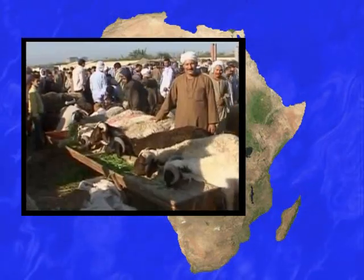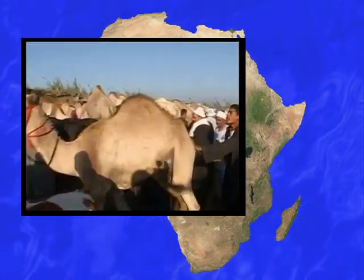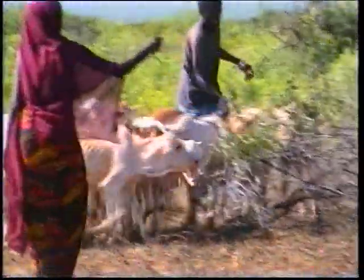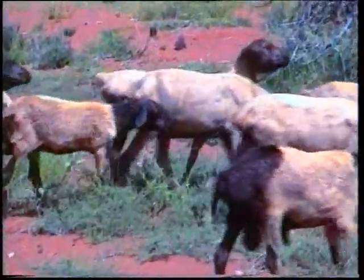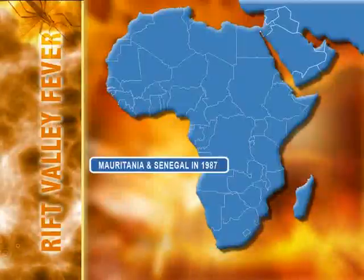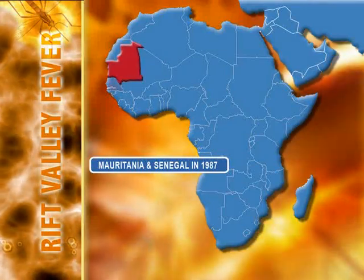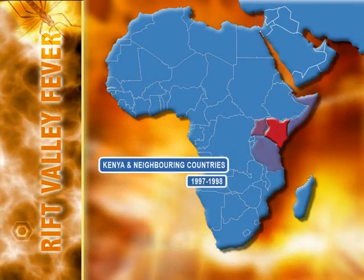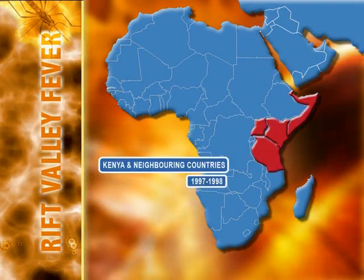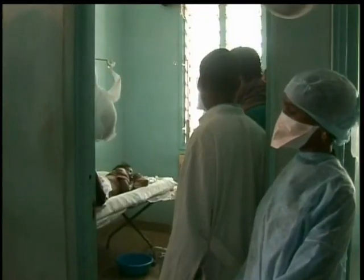Numerous deaths and abortions in sheep and cattle, and some losses in goats, water buffaloes, and camels were also recorded. Other noteworthy African outbreaks in which high mortality in animals and deaths in humans were reported include outbreaks in Mauritania and Senegal in 1987, Kenya and neighboring countries during 1997–1998, and a particularly large epidemic in Somalia, Kenya, and Tanzania in 2006–2007.